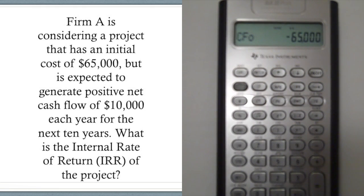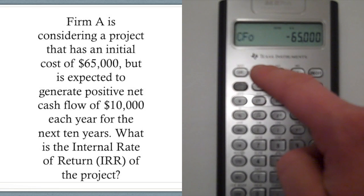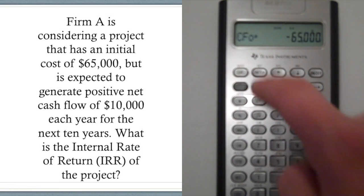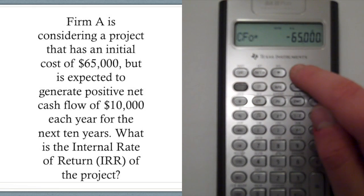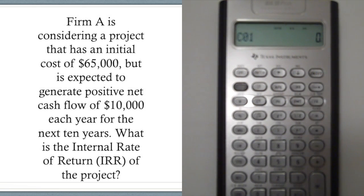And then, of course, to lock it in, hit the enter button right here at the top. Secondly, we can hit the down button, which should say C01. That's the first cash flow after the initial cash flow.